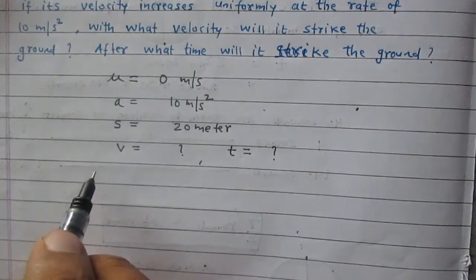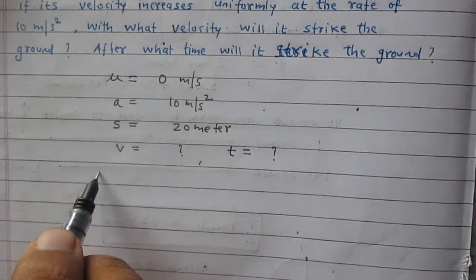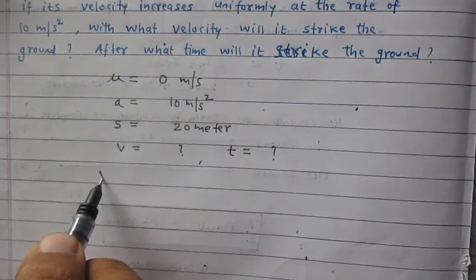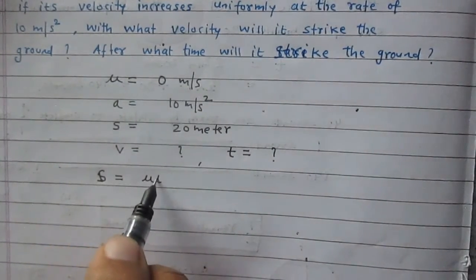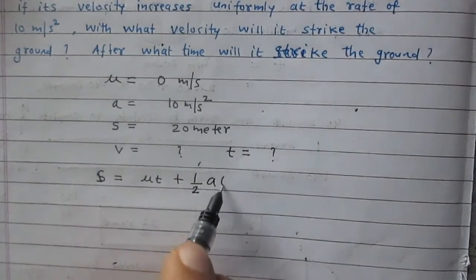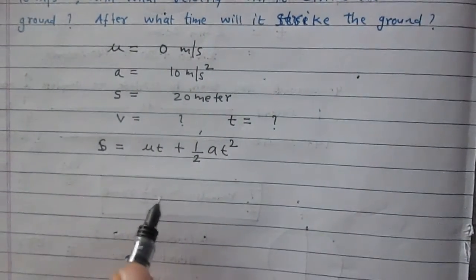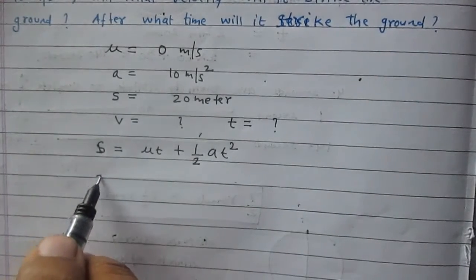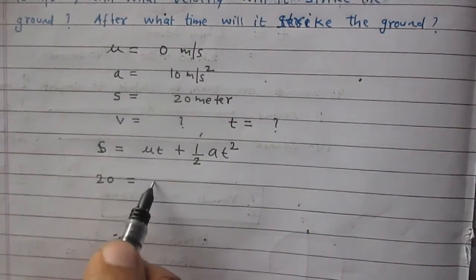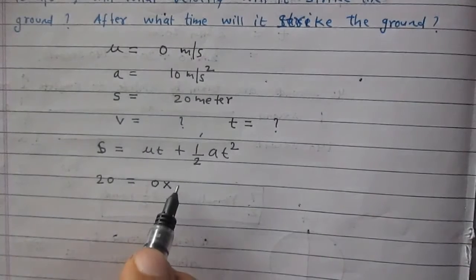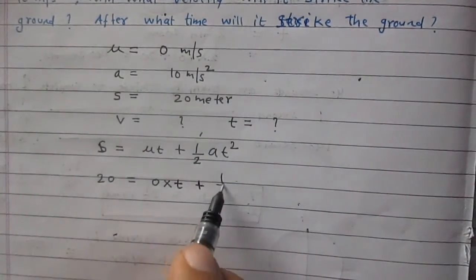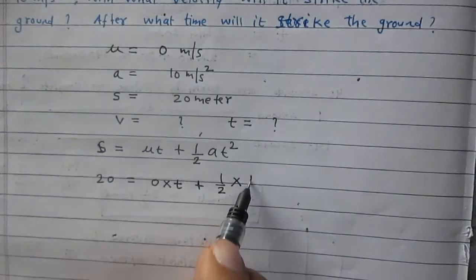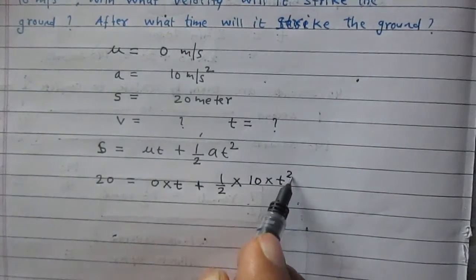Let us consider Newton's equation: S equals ut plus half at square. S is the displacement, it is 20. U is 0. Time taken is t, we need to calculate it. Half of the acceleration—acceleration is 10—and t square.